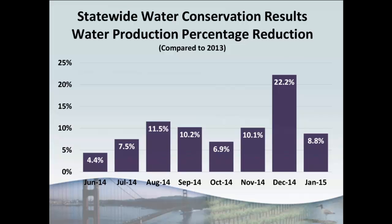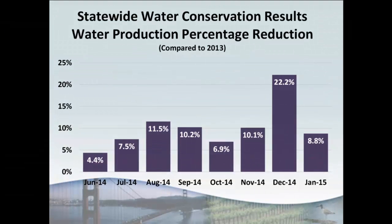A board member asked whether the drop reflects a combination of people seeing their dry lawns and the layperson thinking that since it rained so much in December, the drought must be over. The presenter agreed it's likely a combination of both. This highlights how important the water conservation decisions of individual Californians — such as turning off sprinklers when their lawn looks brown — are in achieving conservation goals. It also shows that individually we must make a concerted effort to cut back water use even more as we move into the next year, whether by changing irrigation practices or making a more permanent change to native landscaping.